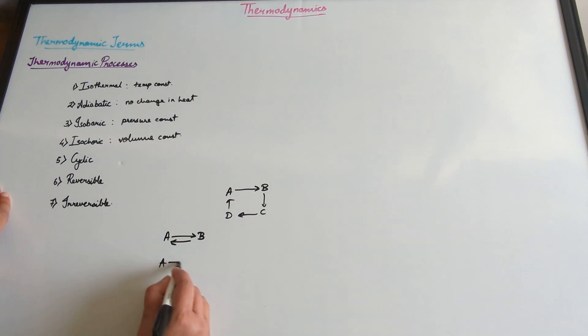And for a system, even if I try to convert, now A converted to B. No matter what I do to B, if B is not getting converted to A, that's an irreversible process.